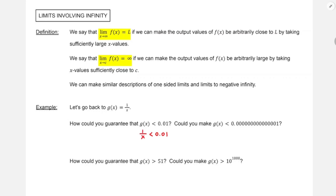g of x — we've got a formula for that, so we can do a little analysis. That would be like asking when is 1 over x less than 0.01? Well, 0.01 is 1 over 100. And 1 over x would be less than 1 over 100 if x was greater than 100. For sufficiently large x values — as long as x is bigger than 100 — we can make g of x less than 0.01.